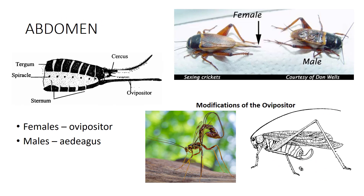The dorsal and ventral abdominal segments are termed tergites and sterna, respectively. Spiracles usually can be found in the conjunctive tissue between the tergites and sterna of abdominal segments one through eight. Reproductive structures are located on the ninth segment in males, including the aedeagus or penis and often a pair of claspers or cerci. On the eighth and ninth abdominal segments in females, external genital copulatory openings and the ovipositor can be found. The ovipositor is the egg-laying apparatus and can be highly modified, as seen in this parasitoid wood wasp that uses its ovipositor to drill into a tree to inject the grubs inside with an egg.